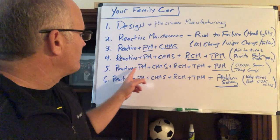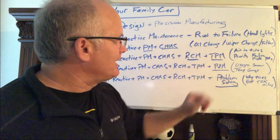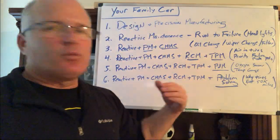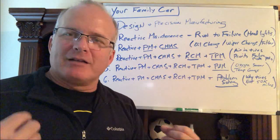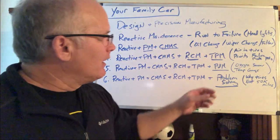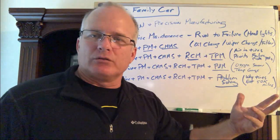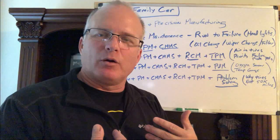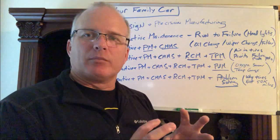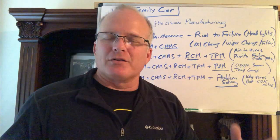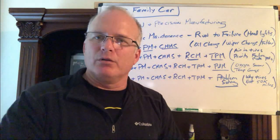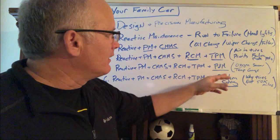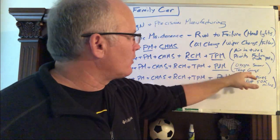Number five adds PDM — predictive maintenance, also called condition monitoring. This is where you add sensors that are better than your sight, smell, and feel. Like an oxygen sensor — most new cars have this — it tells you something's wrong with your combustion system, too much oxygen going out the tailpipe, you're not getting complete combustion. Also, cars for years have had temperature gauges measuring coolant temperature, helping sense information far sooner.